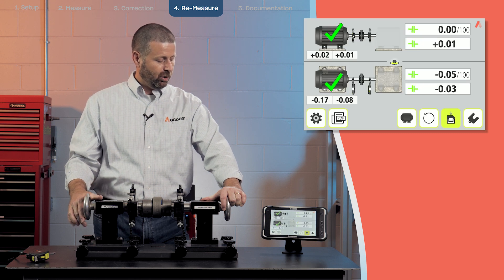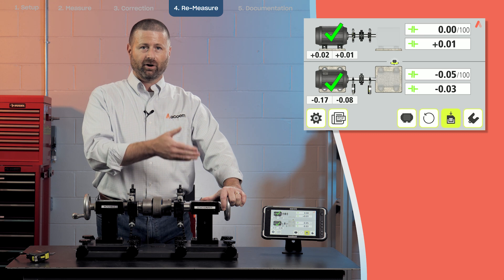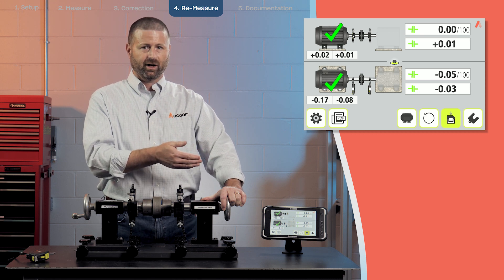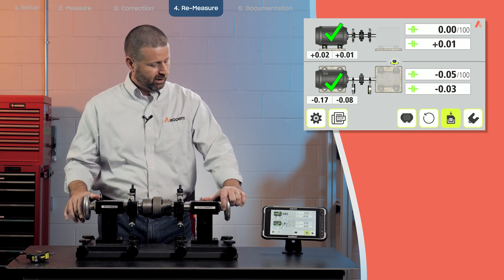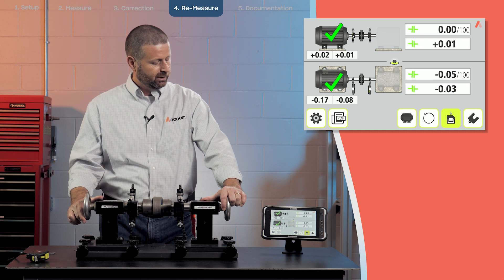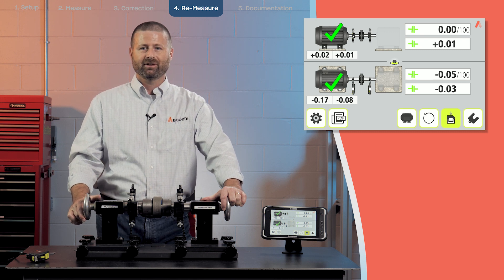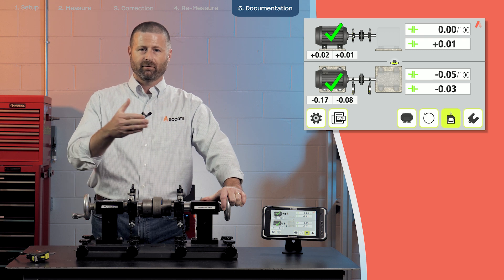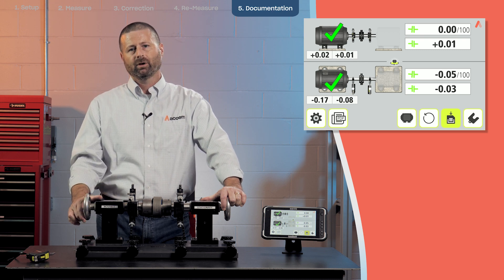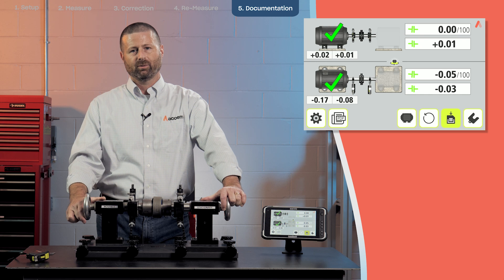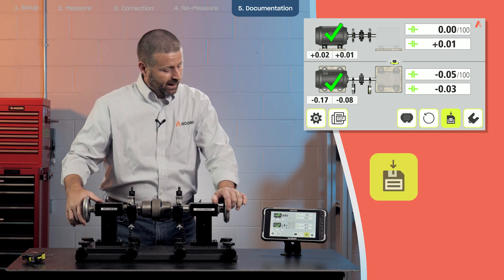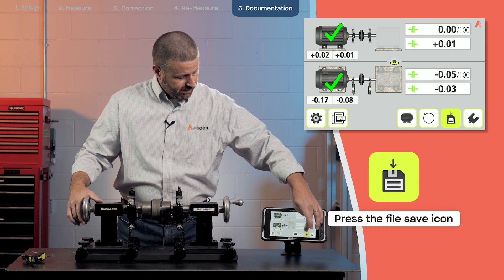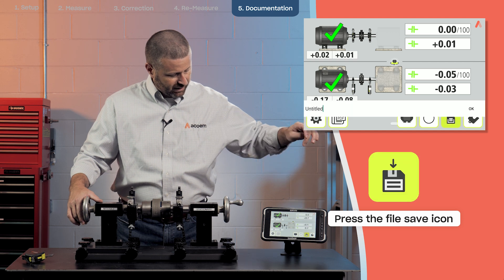Now you can see we have all green angles and offsets in the vertical and the horizontal, and a green check mark on both vertical and horizontal. Now we will save this data into a combined report of this shaft alignment result, plus a soft foot measurement that we took earlier.